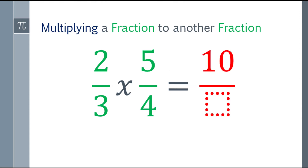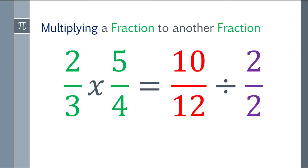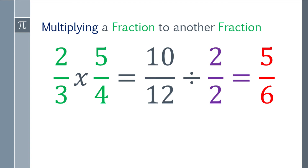Another example: two thirds times five fourths. Starting with the numerator, two times five is equal to ten. Then the denominator: three times four is twelve. So our answer is ten over twelve. Let's check if it can be reduced to lowest terms by dividing by the greatest common factor, which is two. Ten divided by two is five, and twelve divided by two is six.